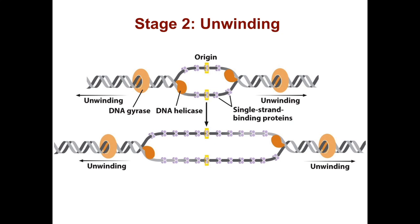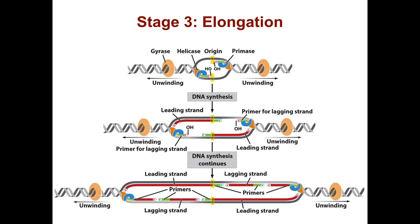Single-stranded binding proteins stabilize the exposed single-stranded DNA and prevent secondary structures from forming. DNA gyrase, which is outside of the unwinding replication fork, relieves the strain on the DNA double helix ahead of the replication fork.